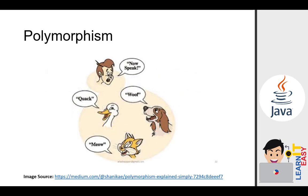The next pillar of the object-oriented programming language is polymorphism. To give you a bird's eye view of what polymorphism means, you can take a look at this photo. This photo depicts a human commanding the animals to speak, and you will notice that from a single command invoked by the human, the responses received are different from each animal.